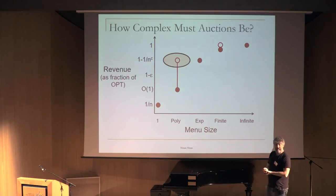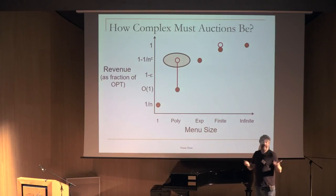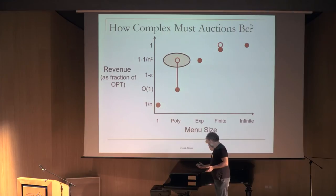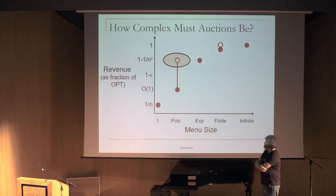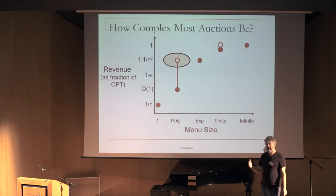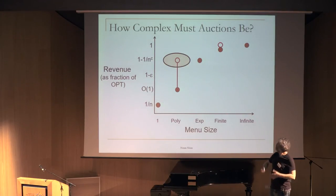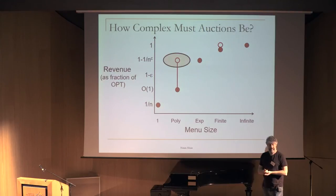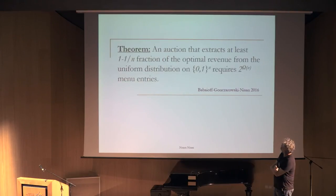Now I want to talk about an impossibility result: why polynomial menu size cannot always get close to 1 fraction of optimal revenue. Here's a simple case: n items each with value uniform on {0, 1}. Selling each item at price 1 gives revenue n/2 with exponentially many menu entries. Selling as a bundle at price n/2 − √n gives revenue roughly n/2 − √n, so a 1/√n loss. This theorem says you cannot do better than a 1/n loss with polynomial menu size.